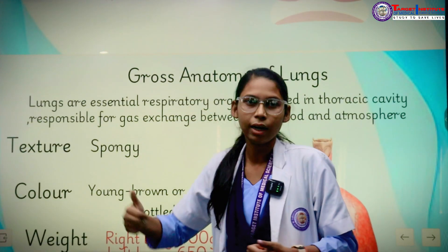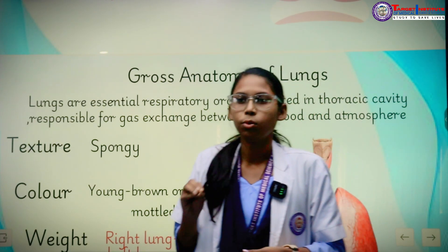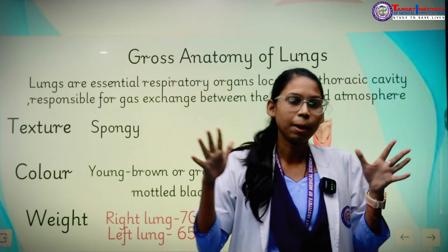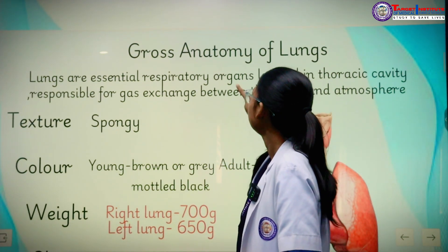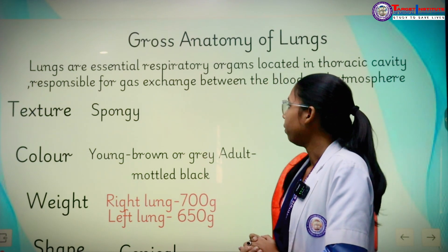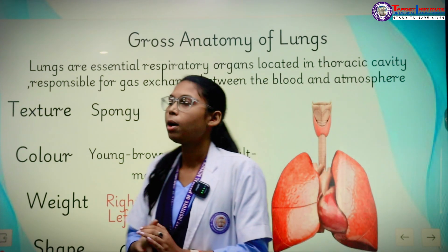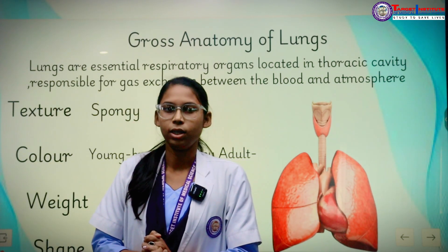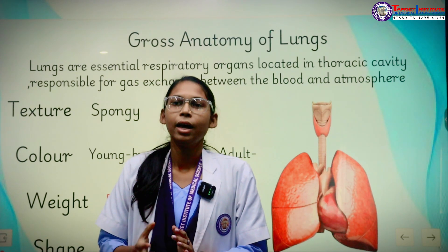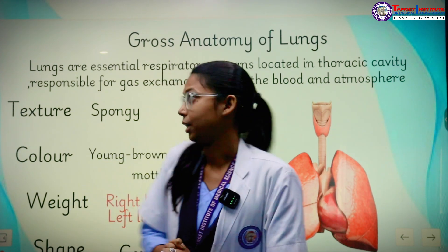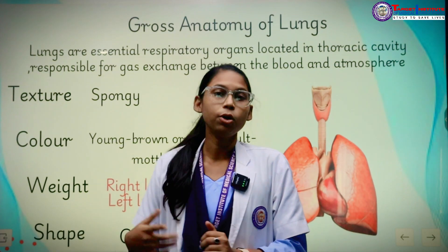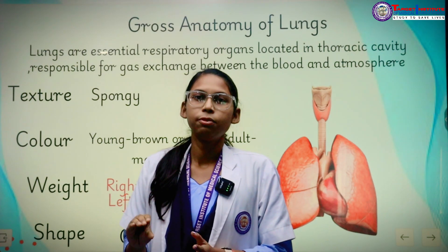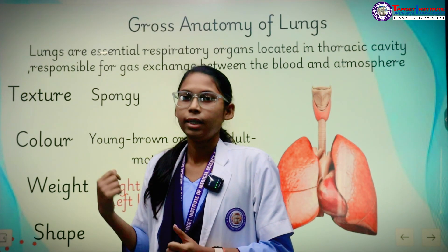As mentioned earlier, I will give only an overview of the other respiratory organs, and the main focus of my presentation is the lungs. So we first see the gross anatomy of the lungs. The lungs are the essential respiratory organ present in the thoracic cavity, occupying the major portion of it. When we talk about texture, its texture is soft and spongy.